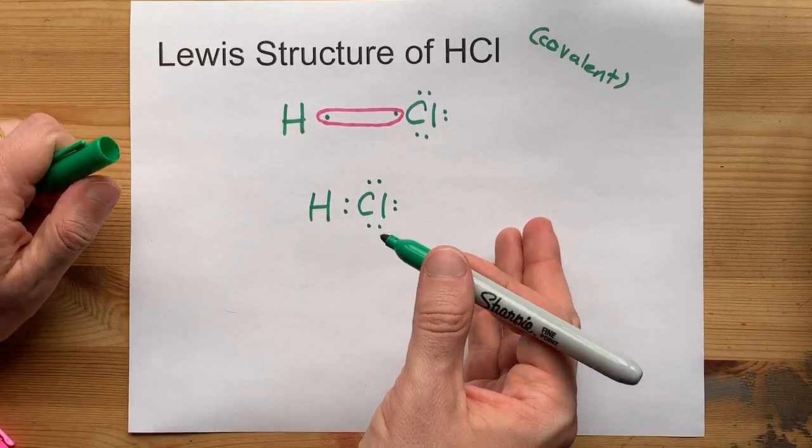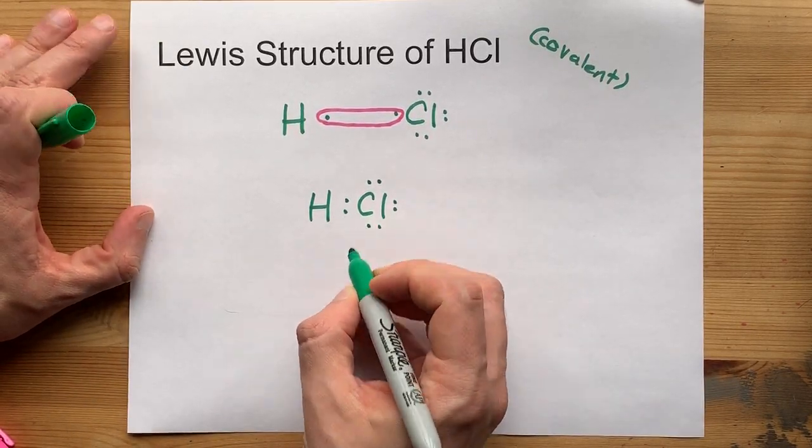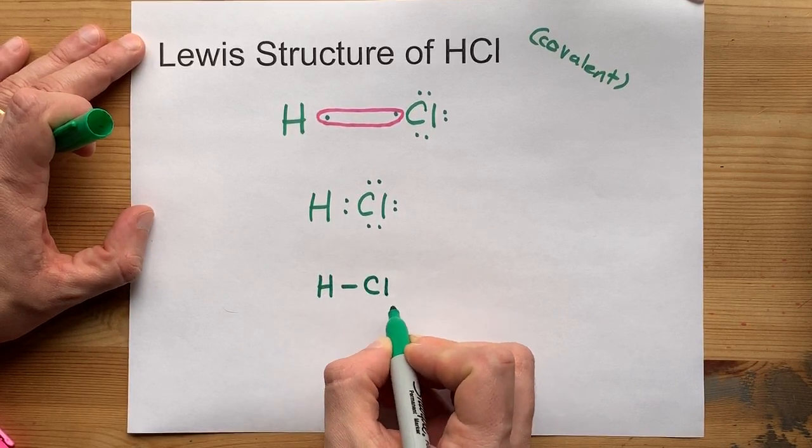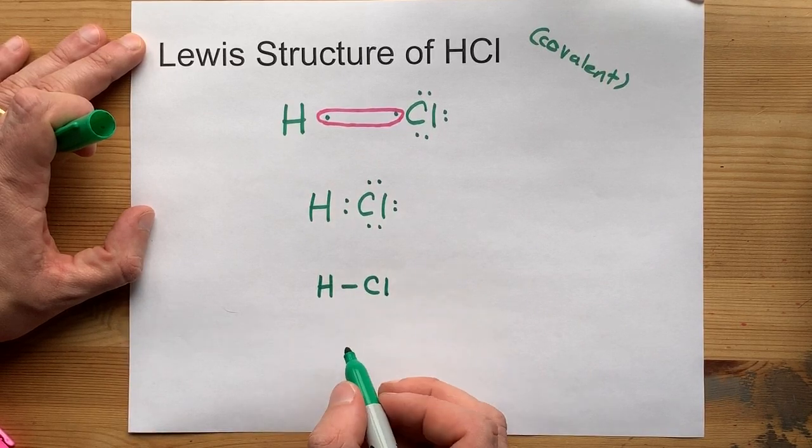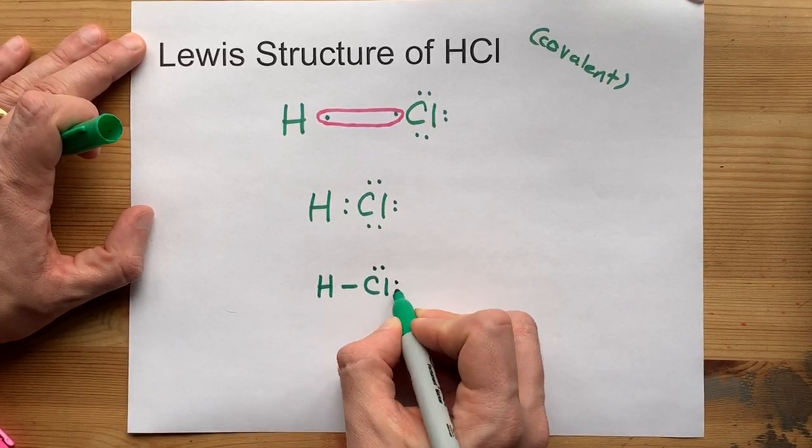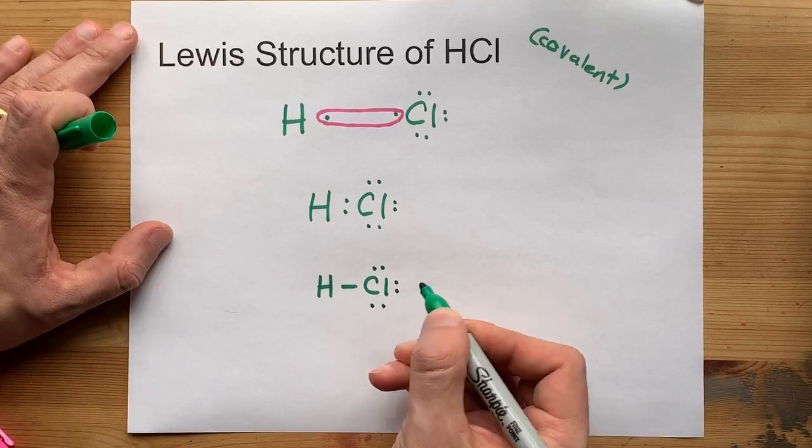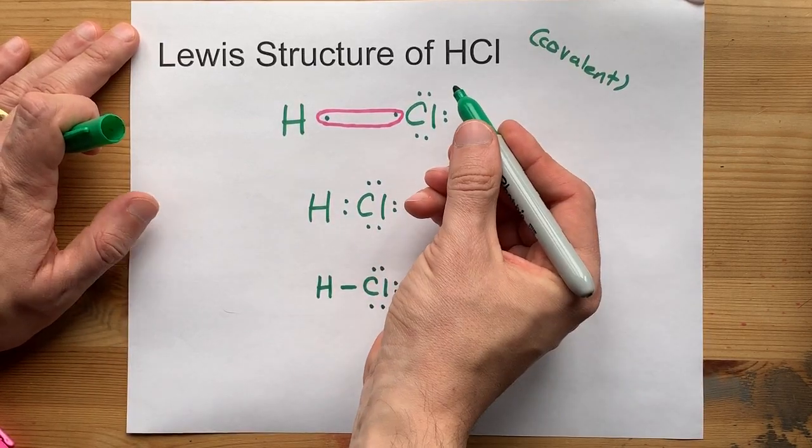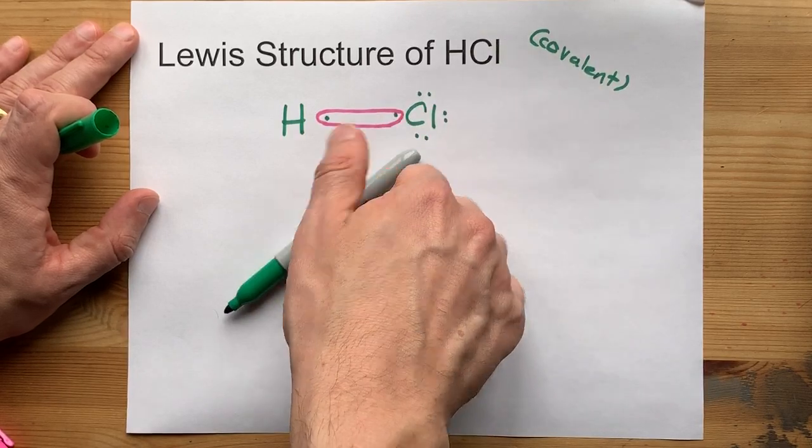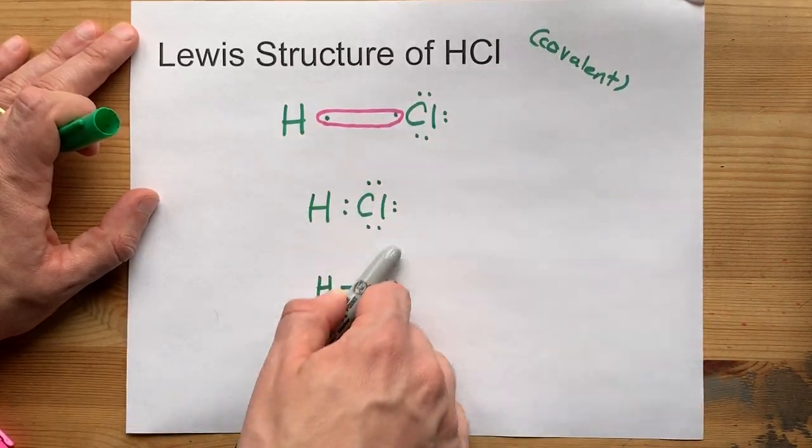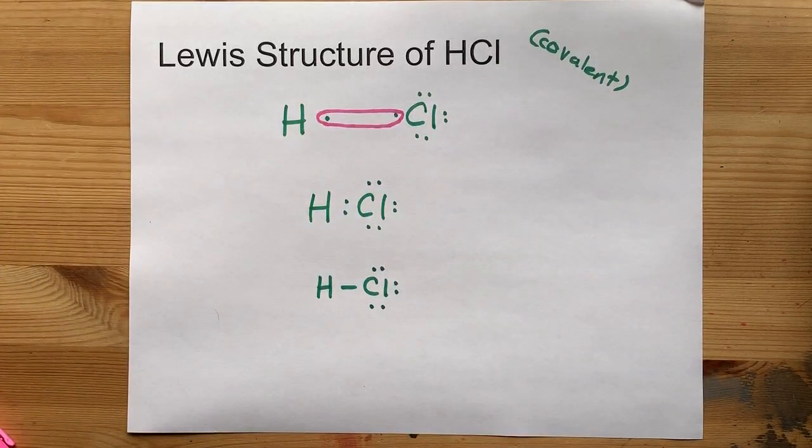And by convention, we usually draw bonding pairs of electrons as single lines. See? Two in between that are shared. Bam! Shared. We're going to draw the non-bonding pairs here. And we have the Lewis structure of HCl. Not too difficult, but you have to know how they share. They're both non-metals, so it's a covalent bond. Best of luck.